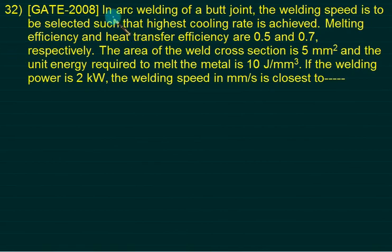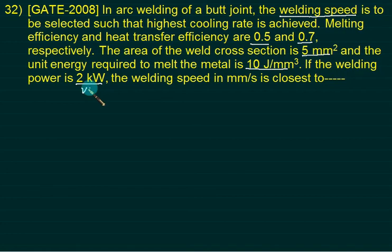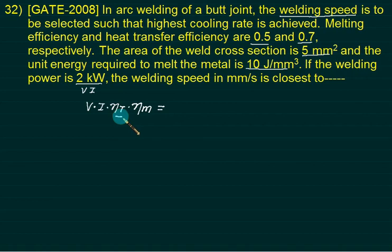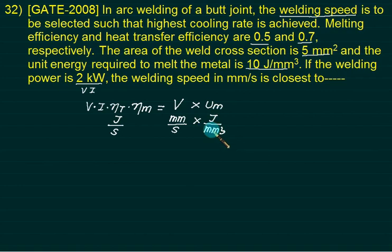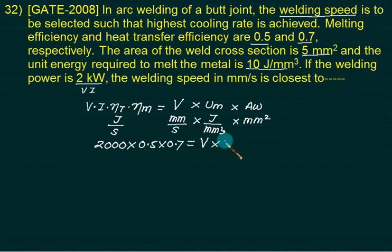In this question, arc welding butt joint: a welding speed is to be selected such that the highest cooling rate is achieved. Melting efficiency is 0.5, heat transfer efficiency is 0.7, area of weld cross-section is 5 mm², unit melting energy is 10 J/mm³, and welding power is 2 kilowatts (V × I). Using dimensional analysis: V × I × η_transfer × η_melt = welding speed × UM × A. So: 2000 × 0.5 × 0.7 = velocity × 10 × 5. Solve for velocity.